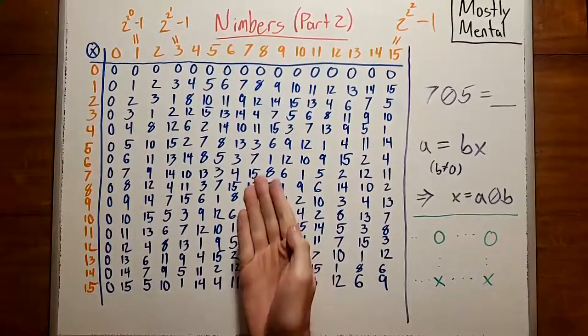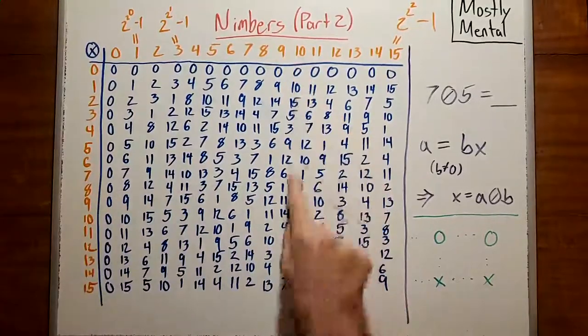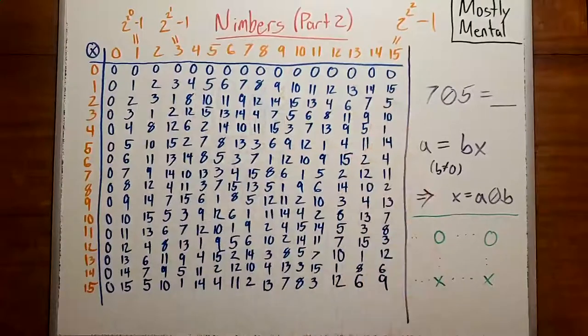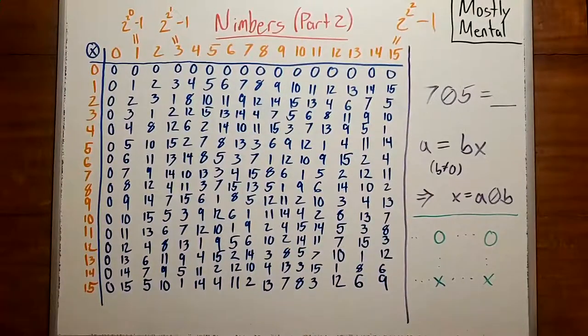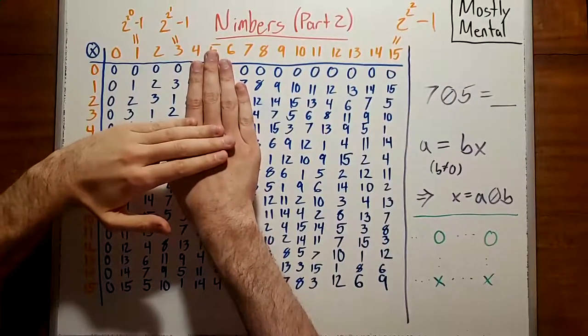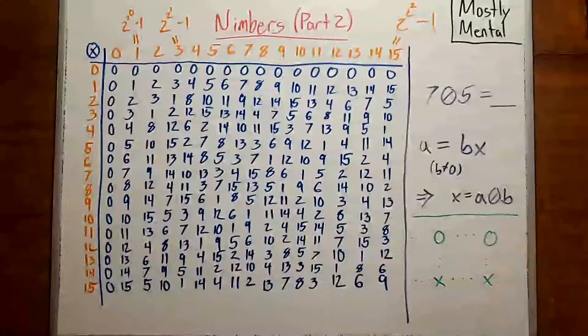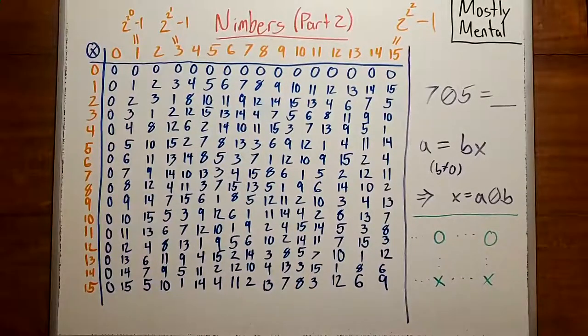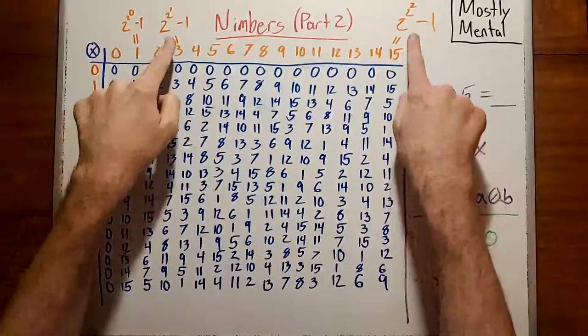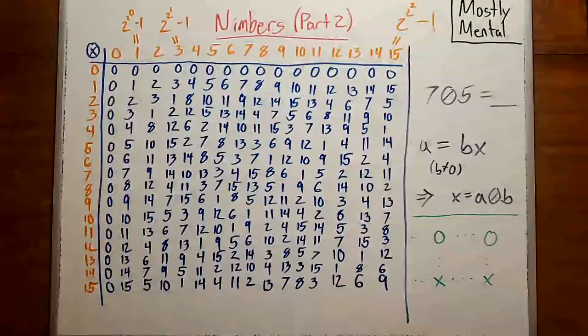let's look at our multiplication table. Notice that in every row and every column except the zeroeth, we see each nimber from 0 to 15 exactly once. And similarly, if we look at just the upper left corner, we see every nimber from 0 to 3. And if we were to extend outward to 255 by 255, or more generally to 2 to the 2 to the n minus 1 by 2 to the 2 to the n minus 1, we would see the same thing.